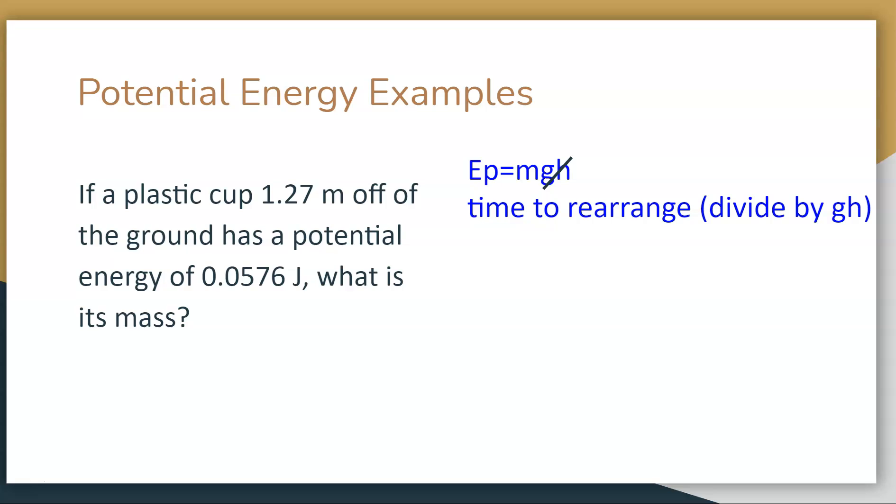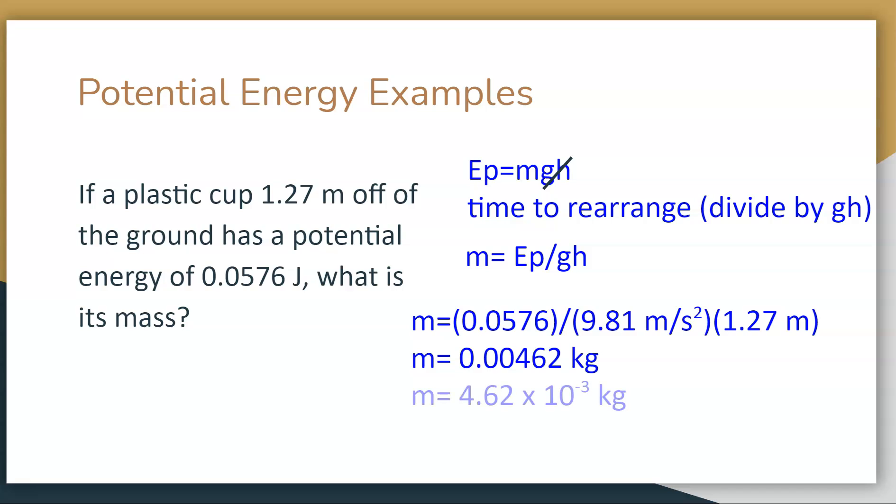Mass equals potential energy divided by gravitational acceleration and height. I take my potential energy and divide it by 9.81 and 1.27. I end up with 0.00462 kilograms. All of these have three significant digits, so my answer can stay as 0.00462 because I don't need to worry about the zeros in front. I can, if I want, put it in scientific notation so we can see it better. But if you left it as 0.00462, I would be fine with that.